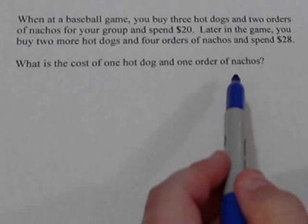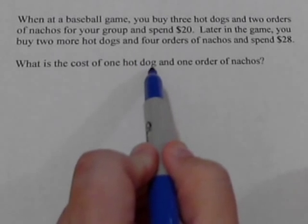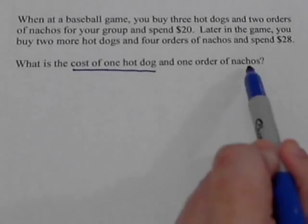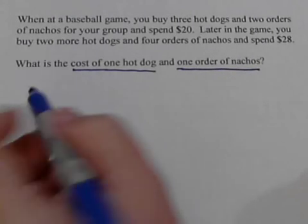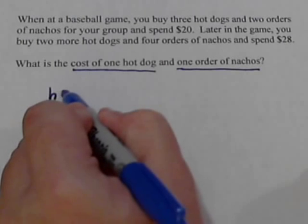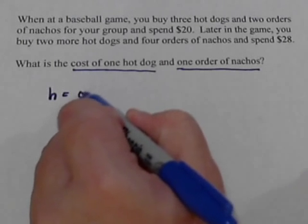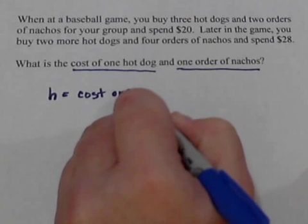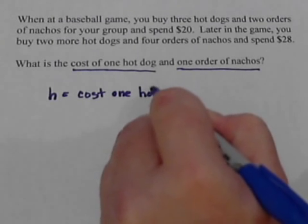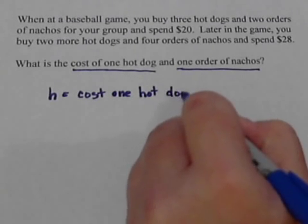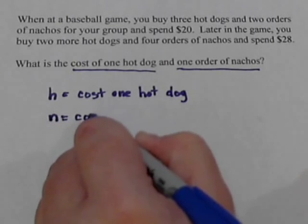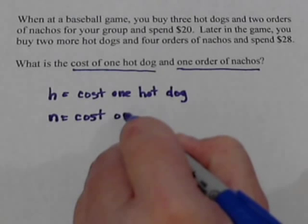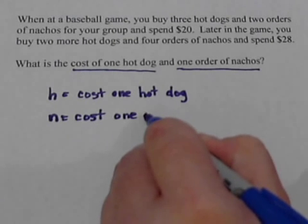Those are the two things we're trying to find: the cost of one hot dog and the cost of one order of nachos. Let's start by defining the variables. We'll let h stand for the cost of one hot dog, and we'll let n stand for the cost of one order of nachos.